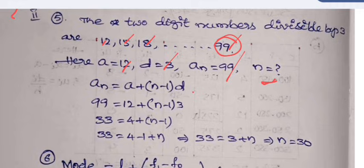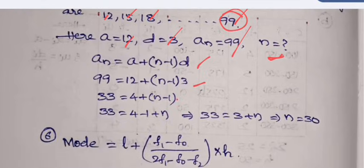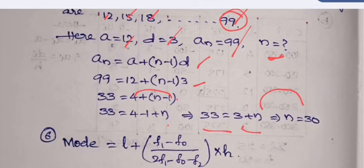For that, aₙ is equal to a plus n minus 1 into d, in which aₙ is 99, a is 12, n minus 1 times 3. Dividing this complete equation by 3: 99 divided by 3 gives 33. 12 divided by 3 is 4 plus n minus 1. 3 gets canceled. Removing this bracket, we get 33 is equal to 4 minus 1 which gives 3 plus n.